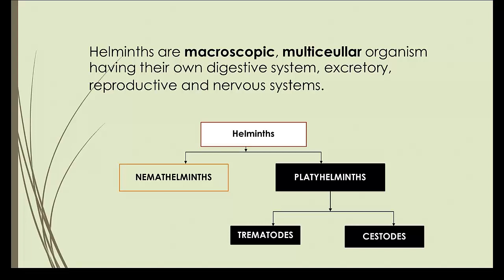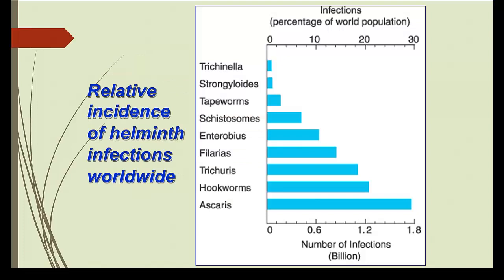Nemathelminths have a tubular structure and we basically call them worms. Platyhelminthes are flat in structure. You have learned about them in detail in your microbiology classes. Platyhelminthes are of two types: trematodes and cestodes. Before going into anti-helminthics, let's very quickly check out their types.